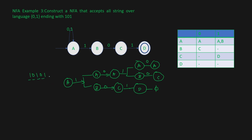We've now processed 1, 0, 1, 0. The last input is 1. In state A with input 1, we again go to states A and B. In state C with input 1, we reach state D. The empty state contributes nothing. So out of the states A, B, and D that we end up in, D is the final state. Therefore, this string is accepted. This is how we construct an NFA that accepts all strings ending with 1,0,1.